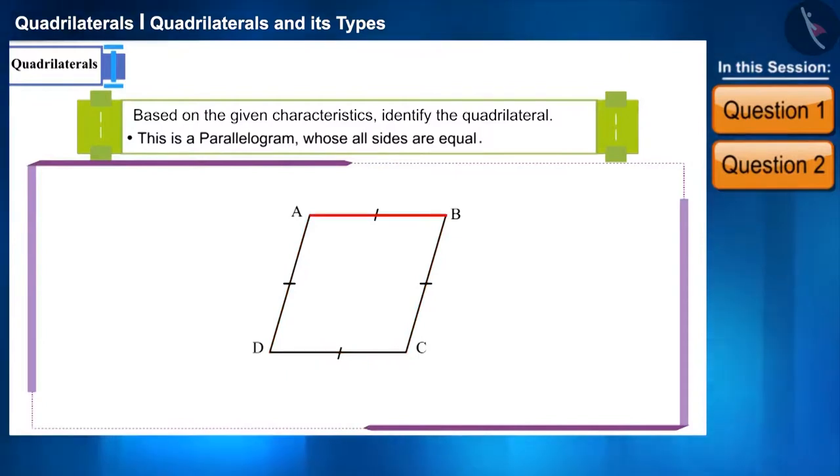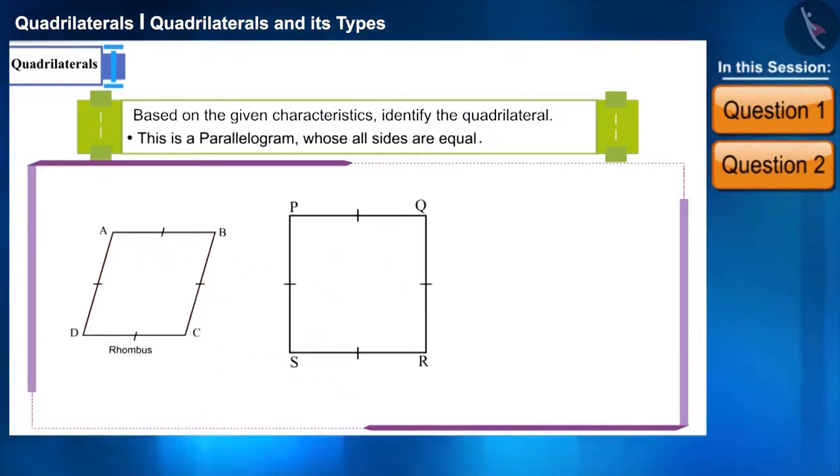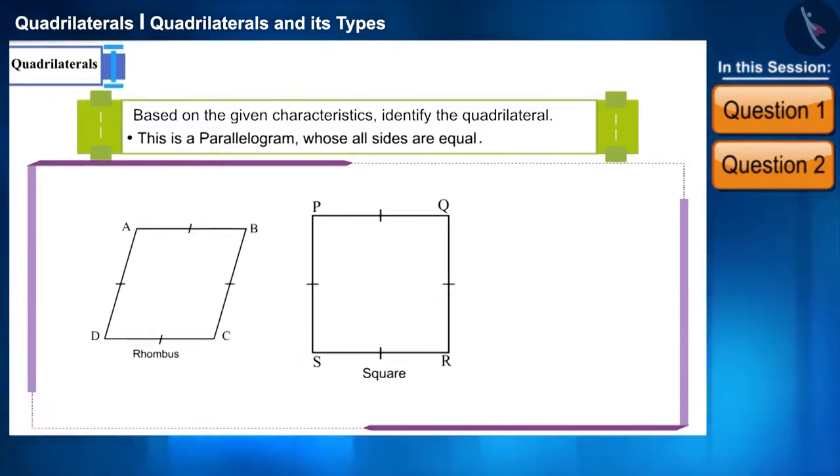Friends, this can also be a square because all the sides of the square are equal too. No information on the angles are provided here, so according to this statement it can either be a rhombus or a square.